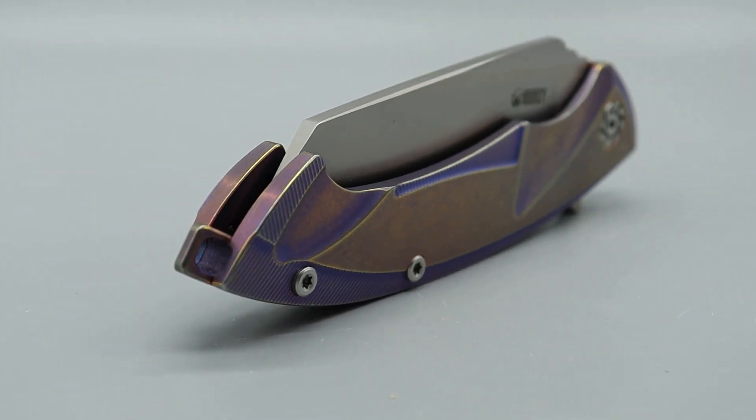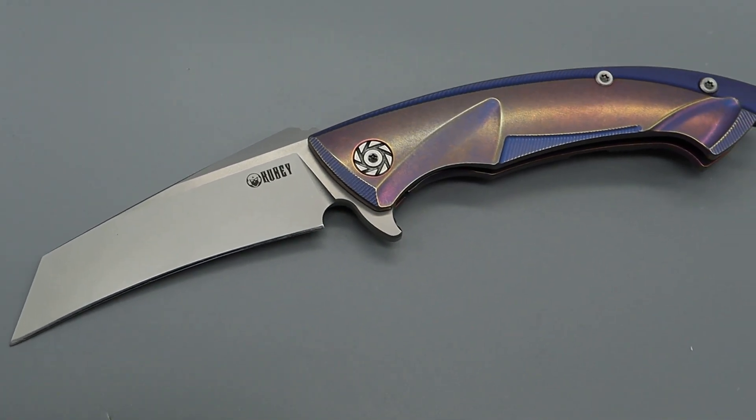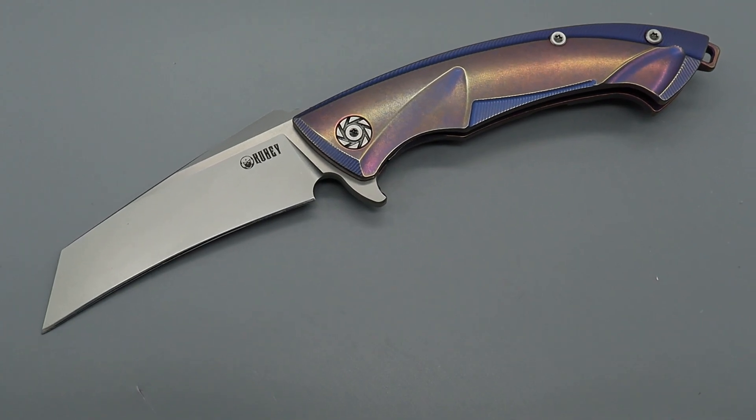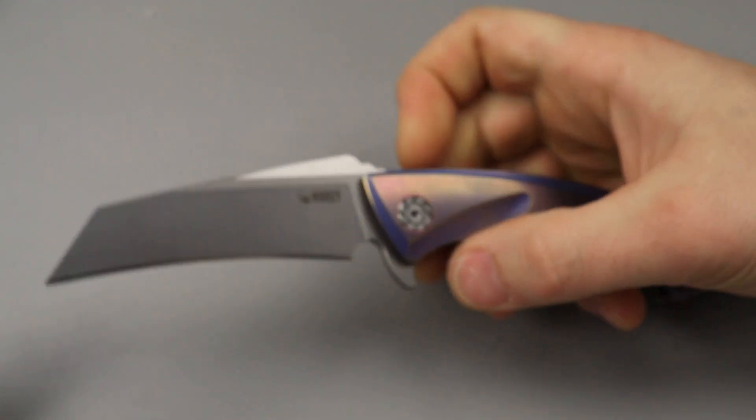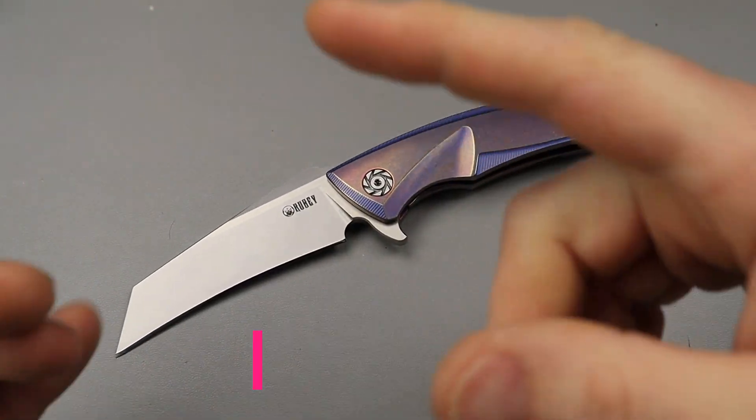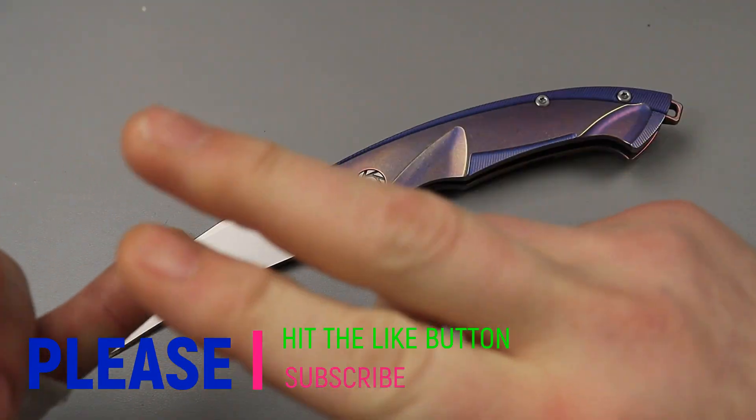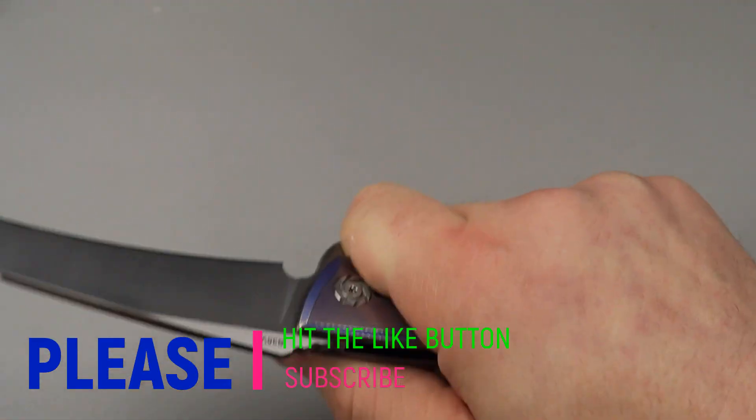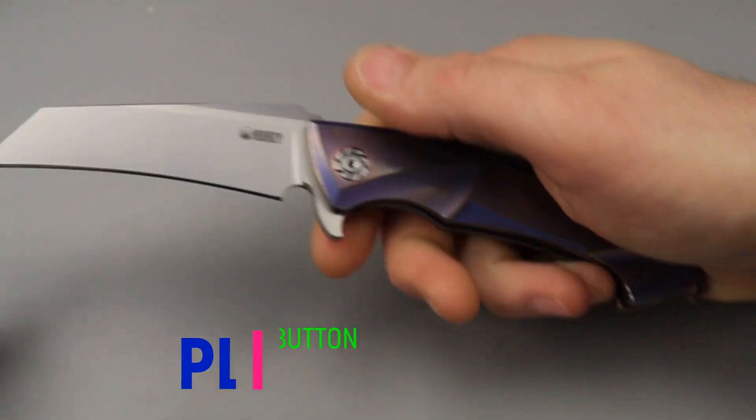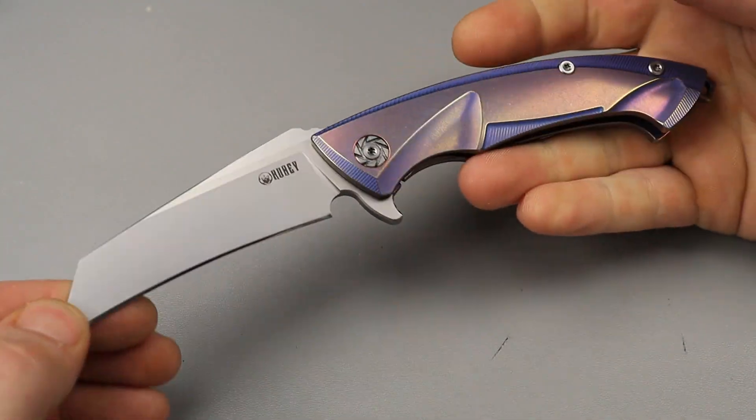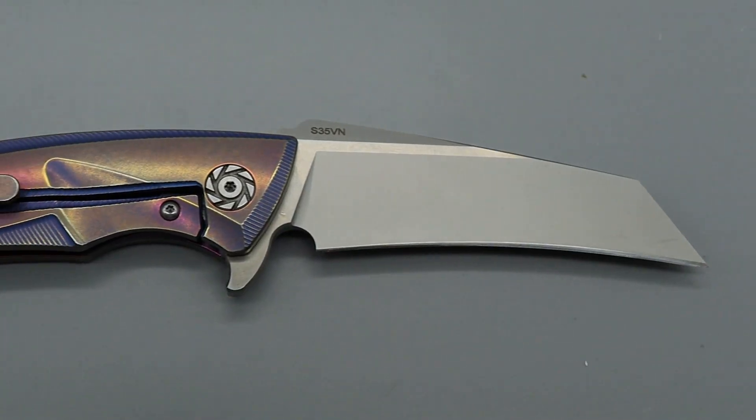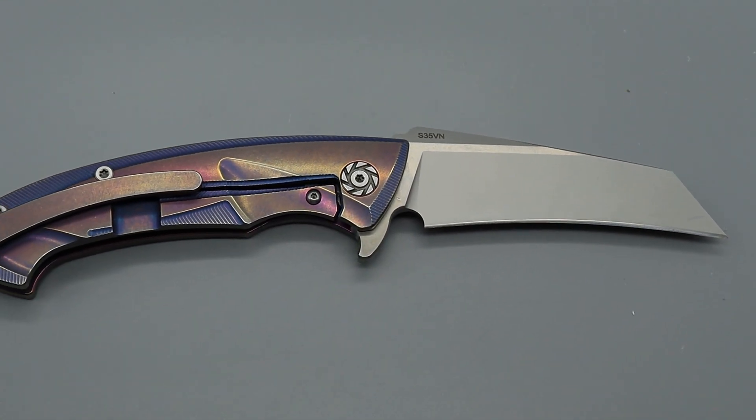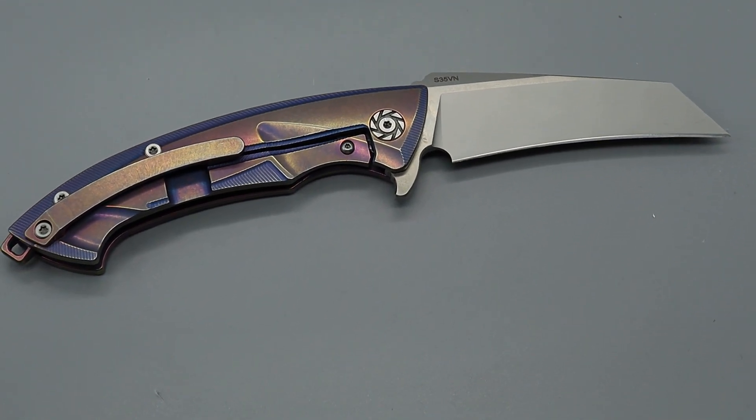But it's somewhat of a self-defense knife with a hawk bill blade, but this is gonna be a great utility cutter or a blade to trap materials. Carpet cutters and vinyl floor cutters are hawk bill blades because they trap the vinyl or trap the carpet when you're cutting through them.